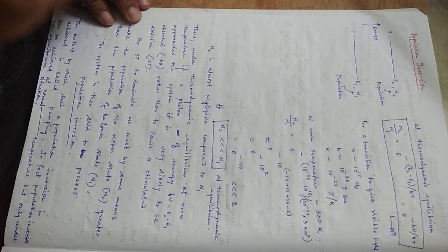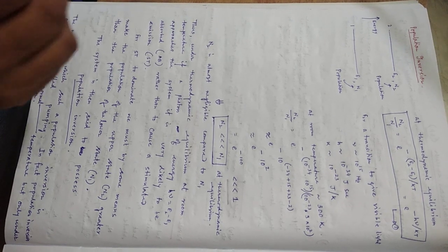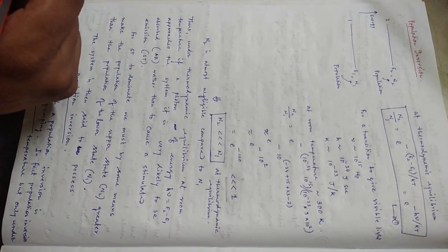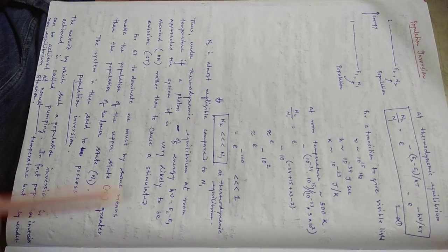What we want to create in this lecture? We want to create a lasing system. Lasing system means what? The emitted radiation has to be highly directional, highly monochromatic, highly coherent, etc.